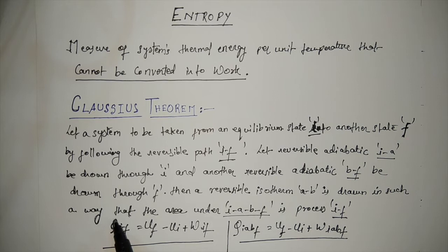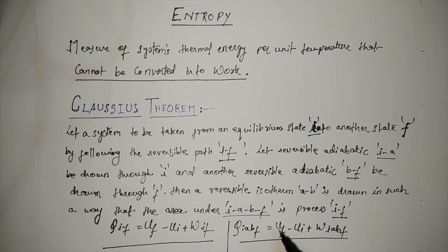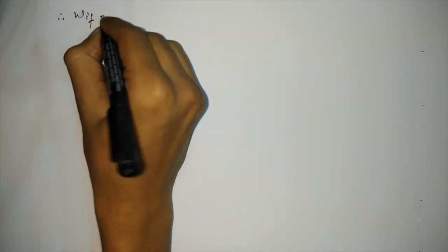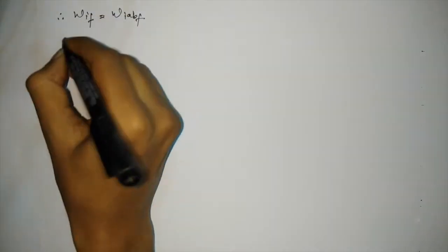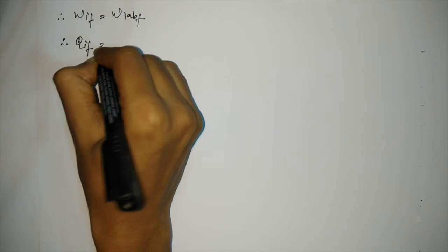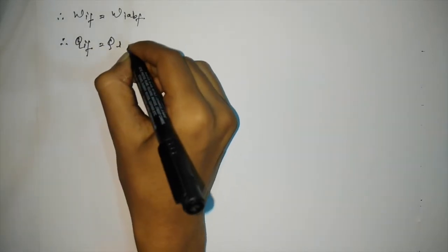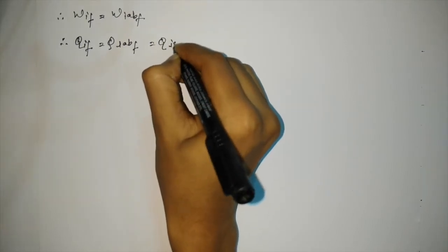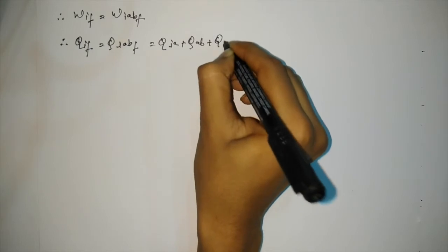From the equations we can establish that heat from i to f equals U(f) minus U(i) plus work done W_if. Or Q_iabf equals U(f) minus U(i) plus W_iabf, that is the work done in the full process of iabf. Therefore we can write: work done in if equals work done in iabf. Therefore Q_if equals Q_iabf, which equals Q_ia plus Q_ab plus Q_bf.